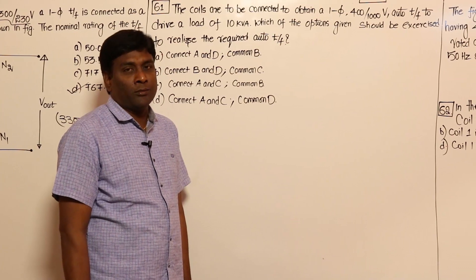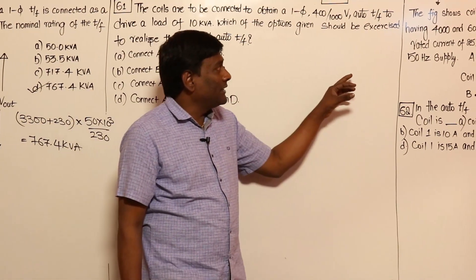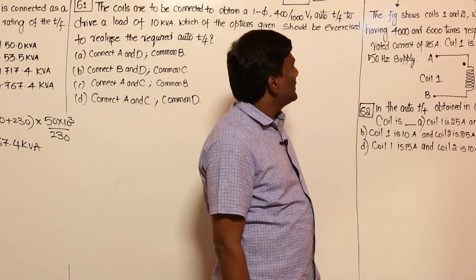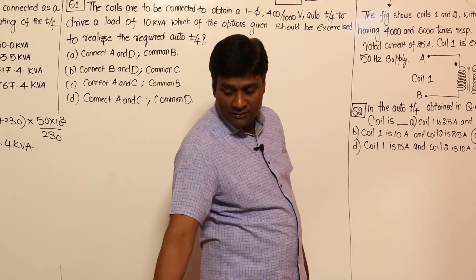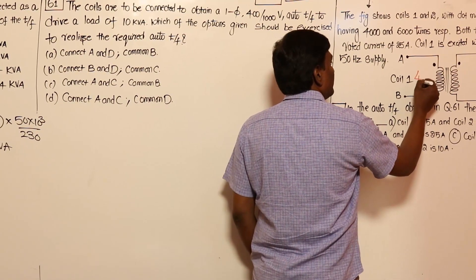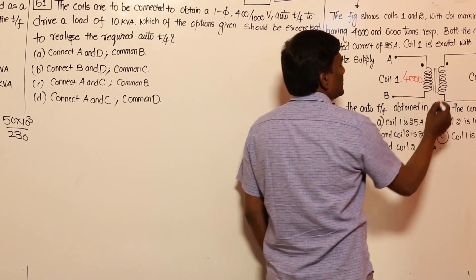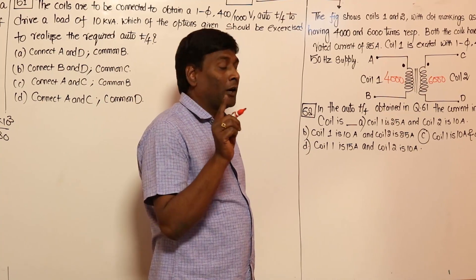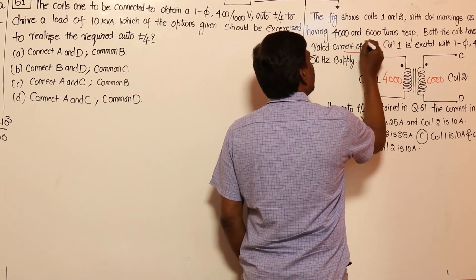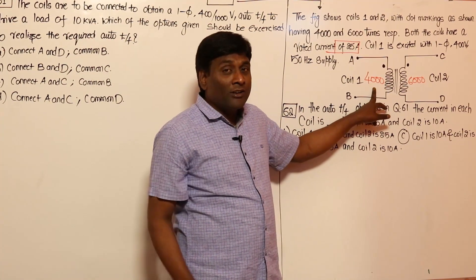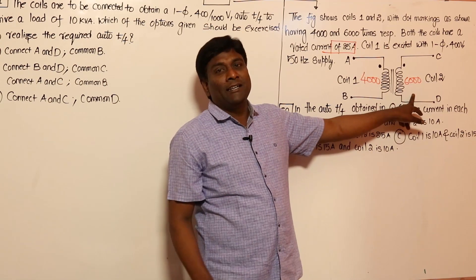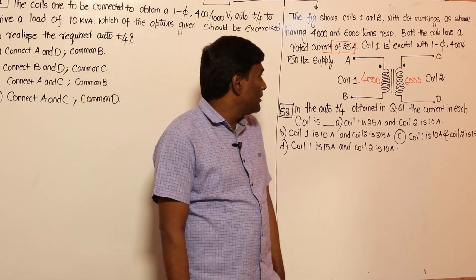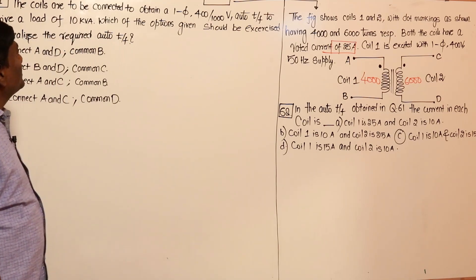Now let us look at the second problem, which is a very good problem. The figure shows coil 1 and coil 2 with dot markings as shown. Coil 1 has 4000 turns and coil 2 has 6000 turns respectively. Both coils have a rated current of 25 amperes — so both LV and HV windings are designed for 25 amperes. Coil 1 is excited with a single-phase 400 volt supply.